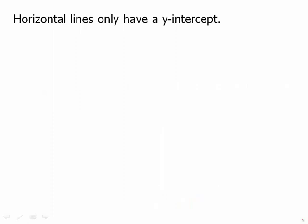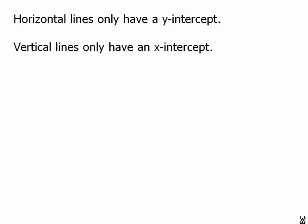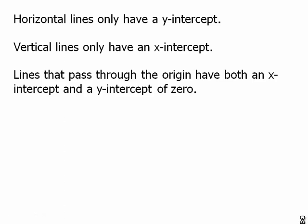Horizontal lines have only a y-intercept. They don't intersect the x-axis because they're parallel to it. Similarly, vertical lines only have an x-intercept — they don't intersect the y-axis because they're parallel to it. Any line that passes through the origin has both an x-intercept and y-intercept of zero.